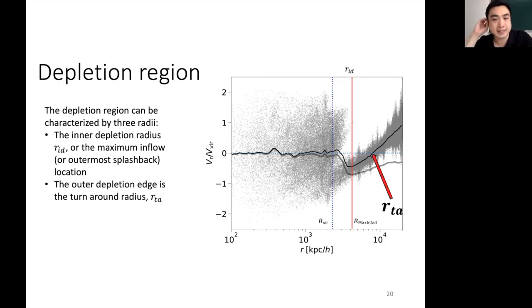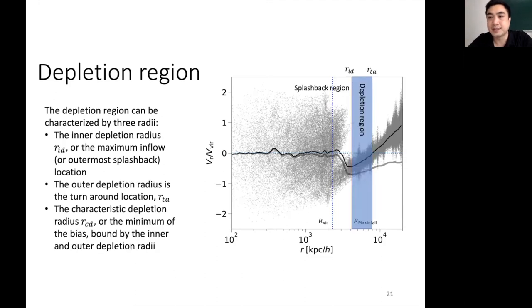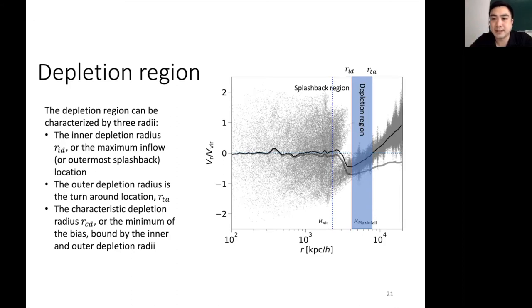Now we want to discuss the turnaround radius. The turnaround radius is located where the Hubble flow overcomes the influence of gravity on particles. This marks the outer edge of the depletion region because particles can no longer flow towards halo centers beyond this radius. So the depletion region is bounded by the maximum infall location as the inner depletion edge, and the turnaround radius as the outer depletion edge. Within this region is where we find the characteristic depletion radius.